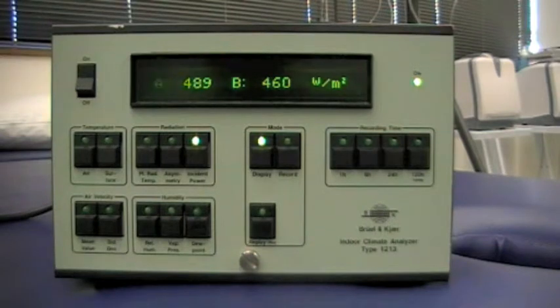This is also looking at the radiant heat and information from the probe, from the two surfaces. Displaying on the left hand side, the A surface which is close to the window, that is the amount of radiant heat being received by that surface, 489 watts per square meter. Whereas on the B surface, there's only 460 watts per square meter. So there's quite a difference there between the two.